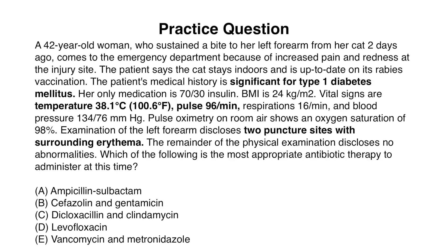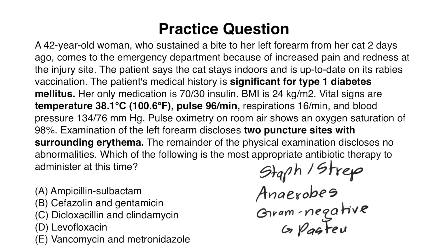Key facts: the patient has type 1 diabetes, a fever of 100.6°F, and two puncture sites with surrounding erythema. She is at higher risk given her diabetes and systemic signs of toxicity including tachycardia and fever. For animal bites, we need to cover organisms in the oral flora of dogs and cats: staph, strep, anaerobes, and gram-negatives — particularly Pasteurella. Typically, first-line treatment for animal bites is Augmentin, but because this patient has risk factors, IV antibiotics are appropriate. The correct answer is the IV alternative to Augmentin, which is ampicillin-sulbactam (Unasyn).